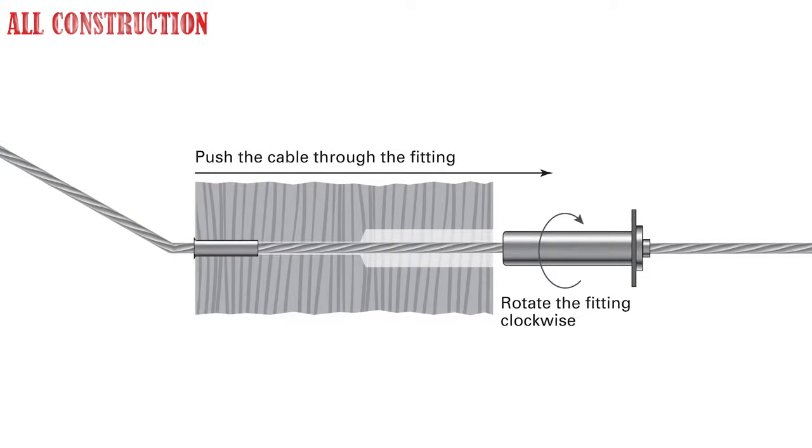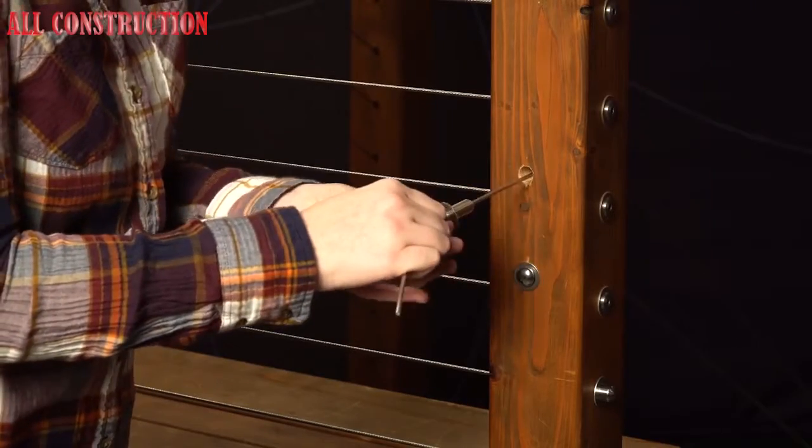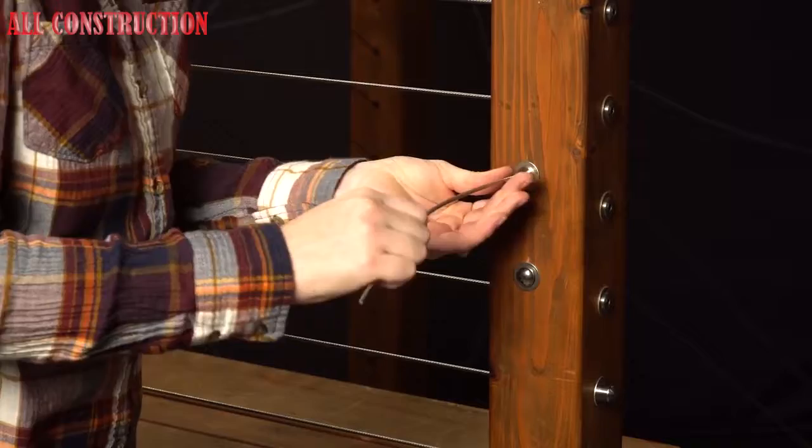Rotate the pull lock fitting clockwise as you push it onto the cable. If the cable begins to unravel, you're rotating the fitting in the wrong direction. Push the pull lock fitting along the cable and firmly into the hole in your post. Pull on the cable, cable gripping pliers are helpful for this, to create as much tension as possible as you seat the pull lock fitting into the hole.